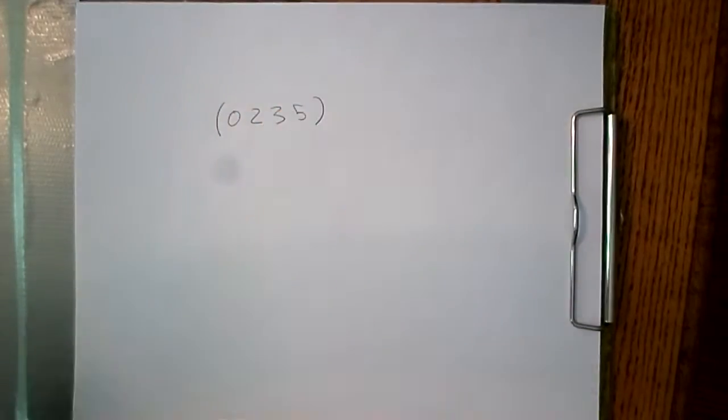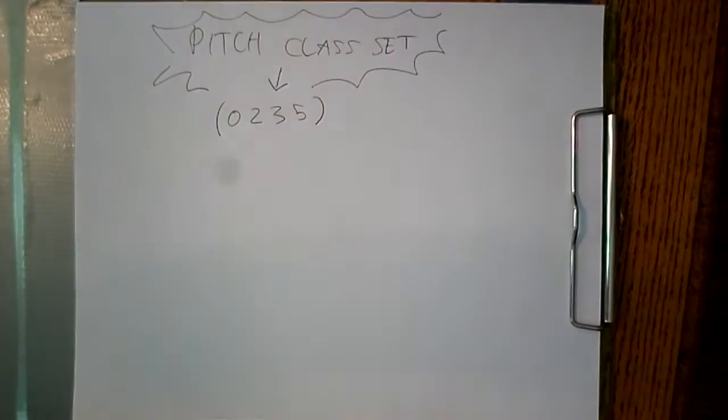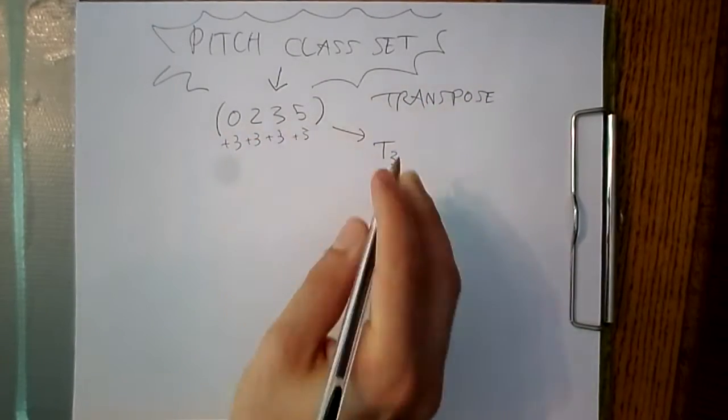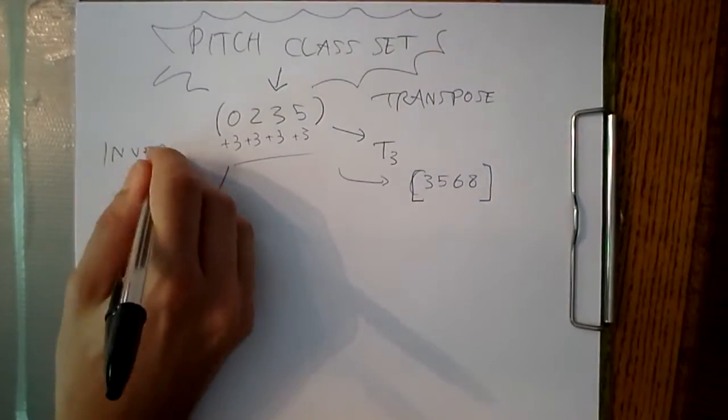These pitch classes are then treated like sets, and then they're called, you guessed it, pitch class sets. Pitch class sets can be transposed and inverted. We just use math now to describe it instead of using the letters. To transpose, we just add or subtract by a certain amount.